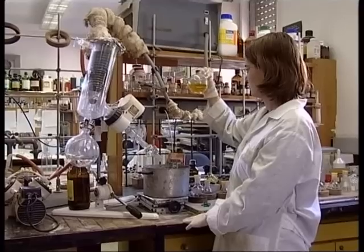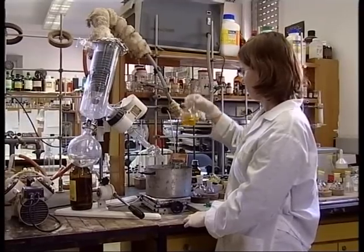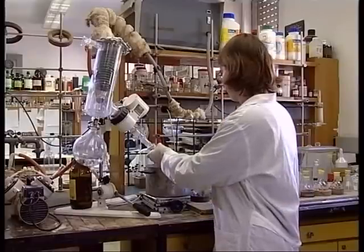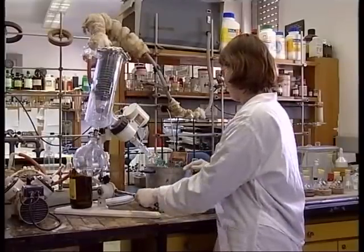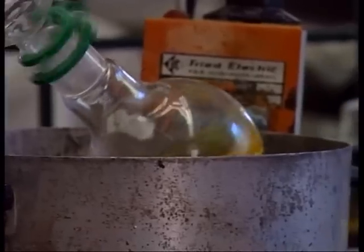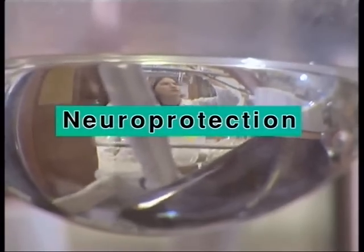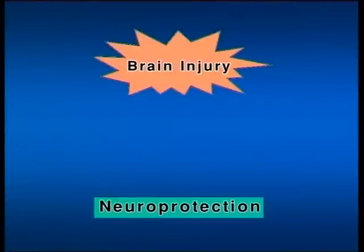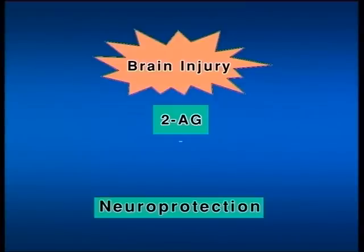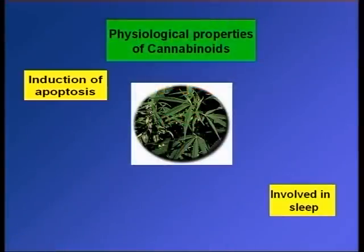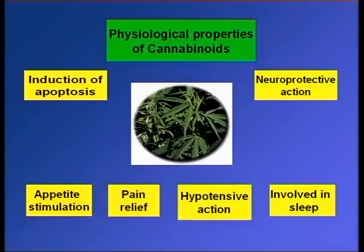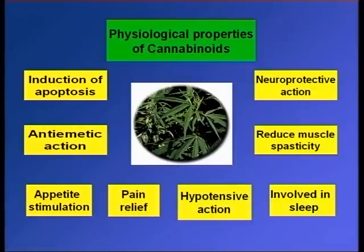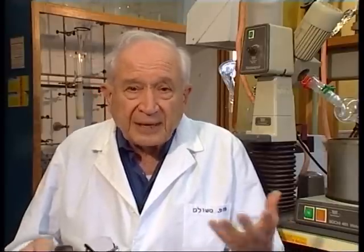Why do we have that system of receptor and endogenous cannabinoids? Just in order to cause high? No. This is a very important physiological system, which is involved in a large number of physiological and therapeutic reactions. For example, anandamide and 2AG are involved in neuroprotection. When we have brain trauma, the brain tries to reduce the damage by overproducing these compounds, which lower the damage. They are also involved in anxiety and sleep — essentially all physiological reactions that have been investigated.